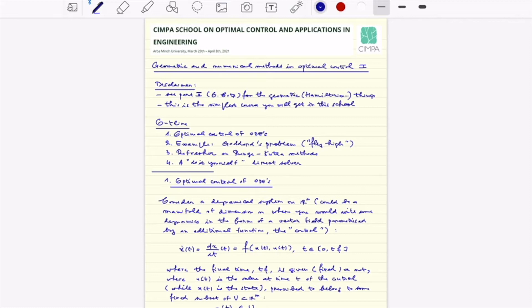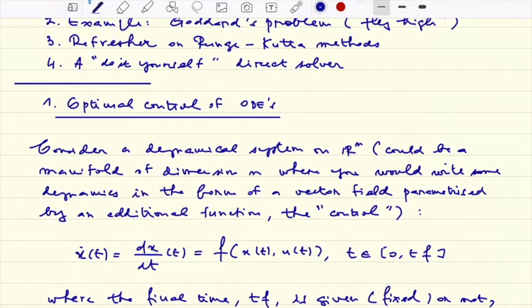So let's go to the first section, optimal control of ODEs. The PDF file of what is written here is available on the webpage. The idea is to consider a dynamical system on R^N, this could be on a manifold using coordinates, which is parameterized by the control U. So U is the control which is in the right hand side of this ODE defined by F, the vector field. X is the state and U is the control.